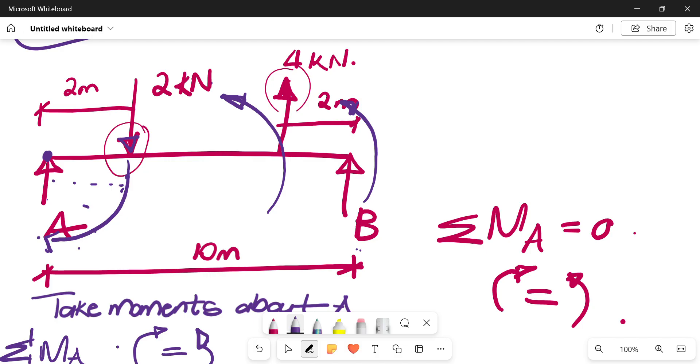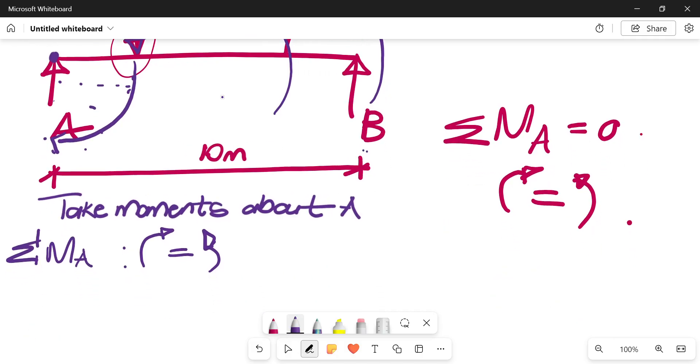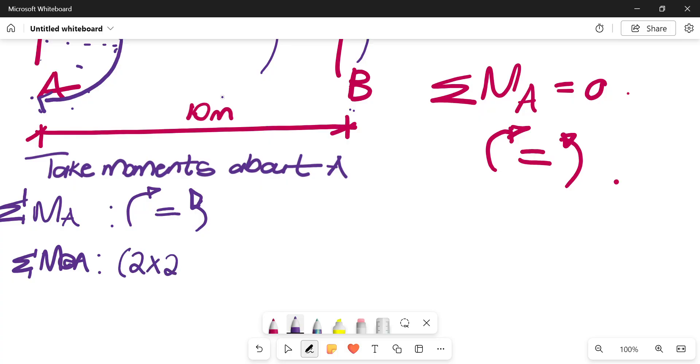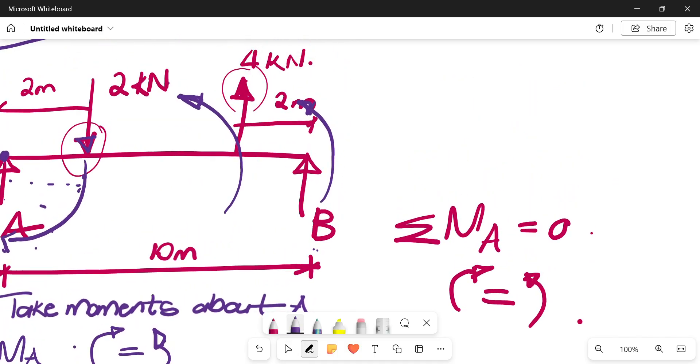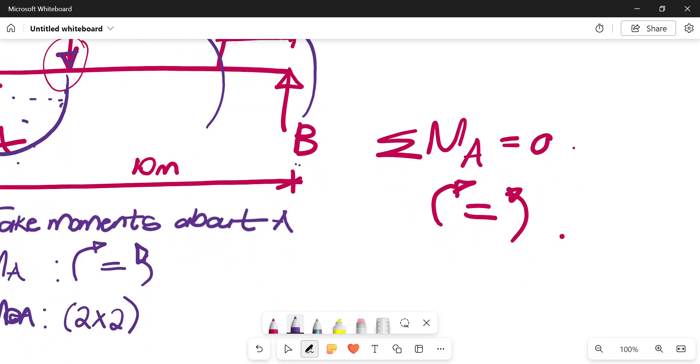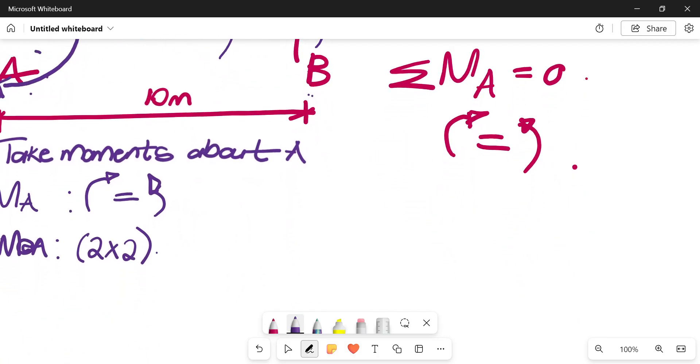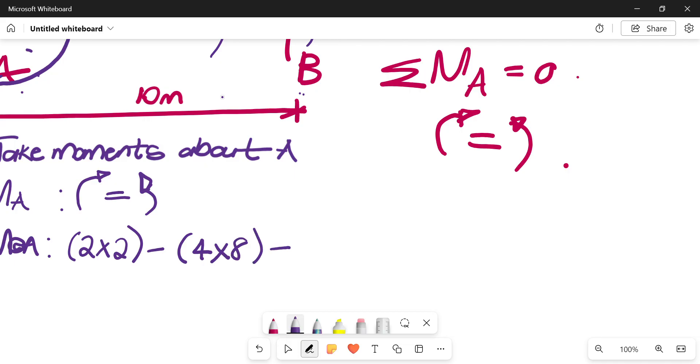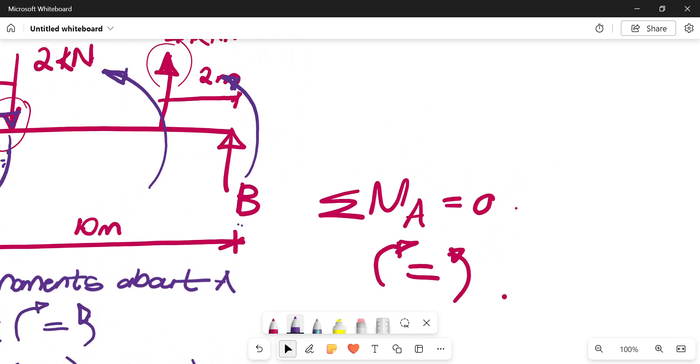So we can say clockwise is positive, okay? Then we will say, taking our moments at A, then we'll say 2 times 2. It's that 2 kilonewtons, and the distance from A is 2. Then we have that 4 kilonewtons, and it's anticlockwise, so it will be negative, 4 times. So we have a 2 on this side, and we have an 8 on that side. Then your RB is also anticlockwise, and it is the entire 10 meters from your position A, okay?